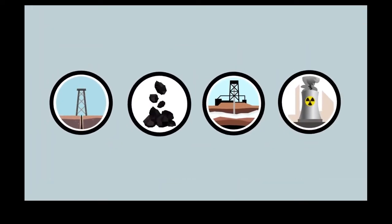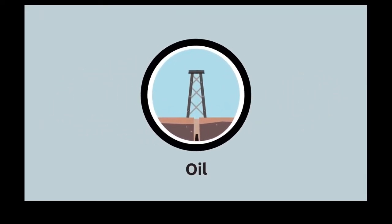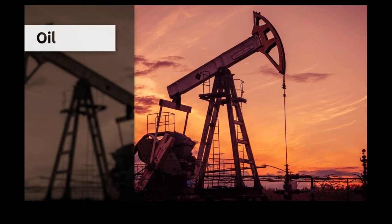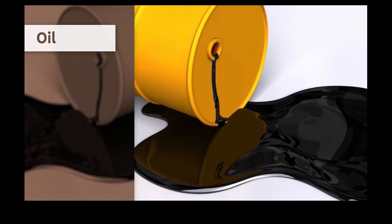These are some of the most well-known non-renewable energy sources. Oil is found under the Earth's surface. It's a liquid substance formed by a mixture of hydrocarbons. Oil has a strong smell and dark color.